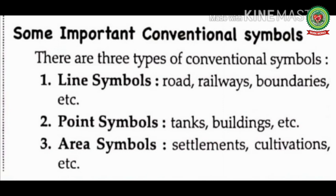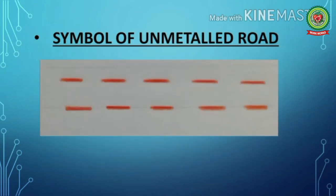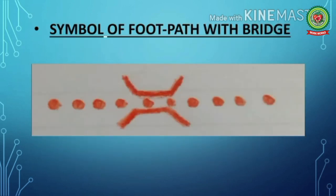The first important conventional symbol is metalled road — pakkar road — depicted with red double lines. Next is unmetalled road — kachar road — depicted with two broken red lines. Next we have car track, which is a road over farmland used by bullock carts, shown with one red line.